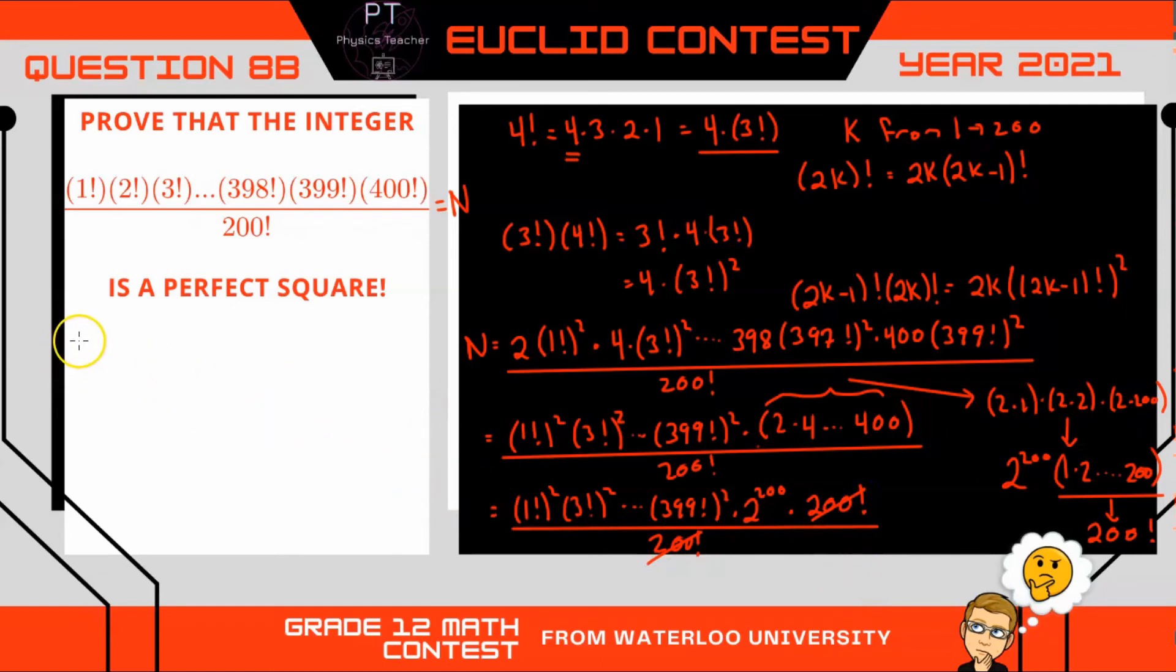I'm just going to continue over here. So what we have now is that n equals 2 to the 200 times by all of the odd factorials squared. So 1 factorial squared, 3 factorial squared, and so on, all the way up to 399 factorial squared.